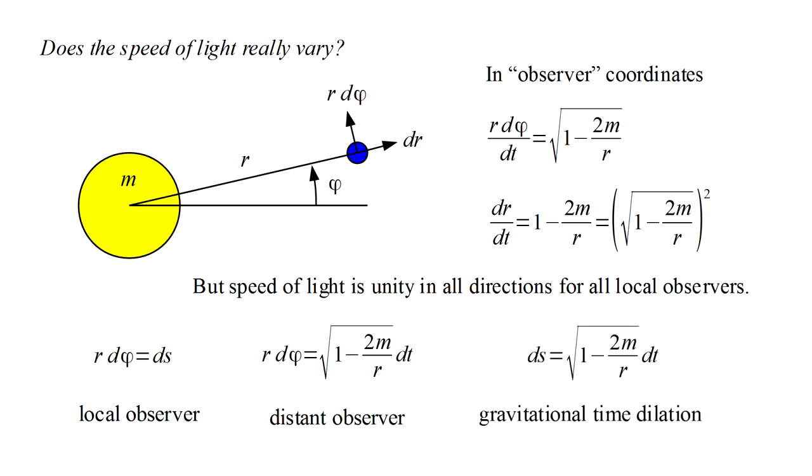Well, we already know from our discussion of gravitational time dilation that ds equals the Schwarzschild factor times dt.